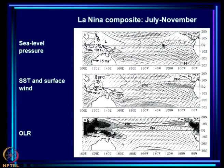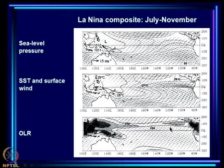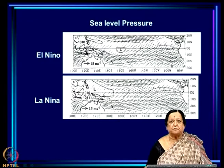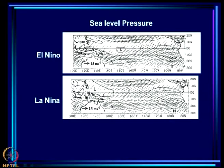The La Niña composite has obviously different characteristics. The low pressure has moved away — remember it was near the dateline before — and the most important difference is in the OLR. Drawing the 240 contour still shows a zonal band, but the convection is not intense here; 230 does not occur here at all. You have the West Pacific cloud zone and a reasonably intense cloud zone going up to the American coast, but in between there is hardly any clouding. For El Niño it was cloudy with reasonable intensity right across.